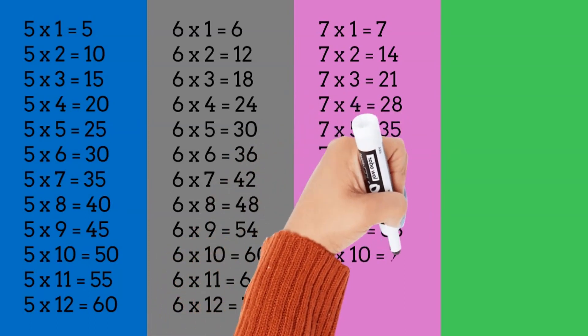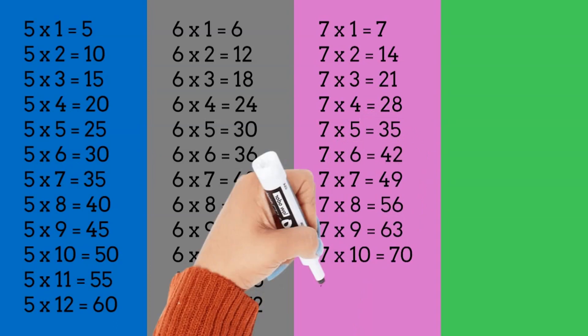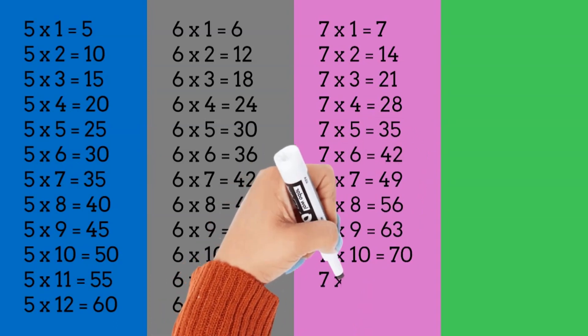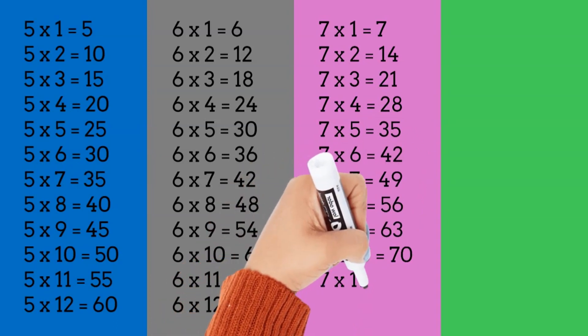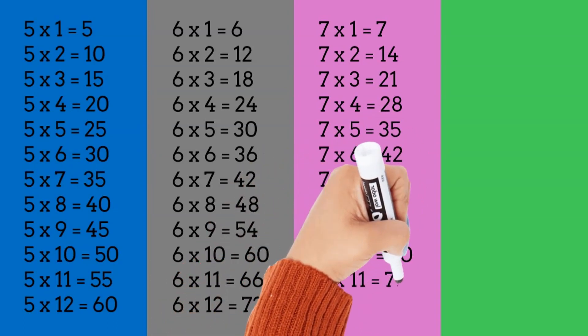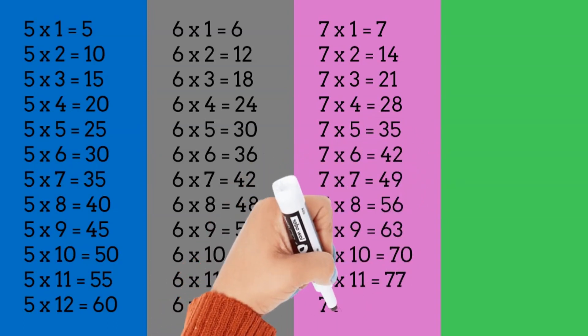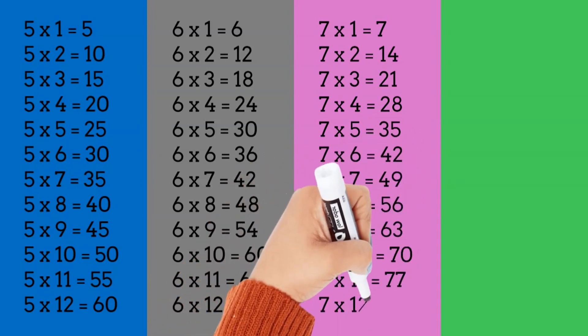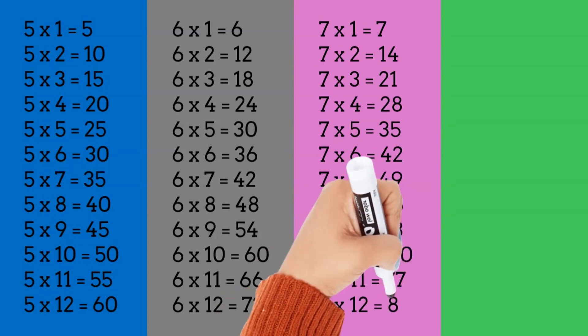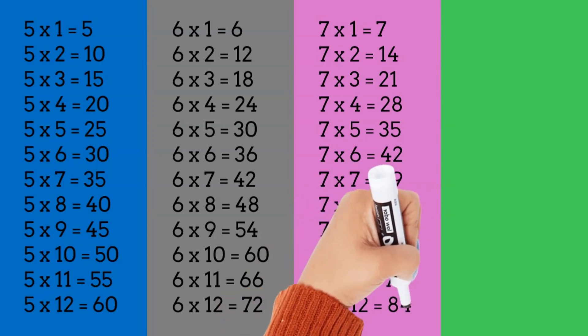7 times 10 is equal to 70. 7 times 11 is equal to 77. 7 times 12 is equal to 84. Good job!